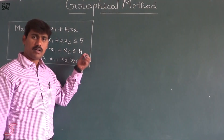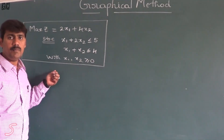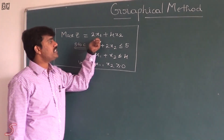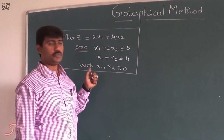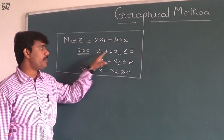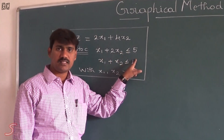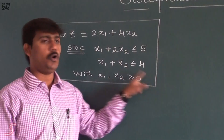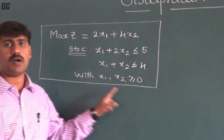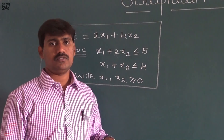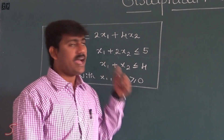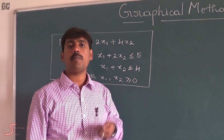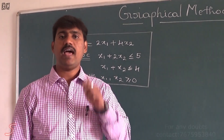Here we have the LP — a maximization problem in the form of: maximize 2x1 plus 4x2, subject to constraints: x1 plus 2x2 less than or equal to 5, x1 plus x2 less than or equal to 4, with non-negativity restrictions x1, x2 greater than or equal to 0. With the help of the Graphical Method, we are going to find the optimum solution for the given LP.